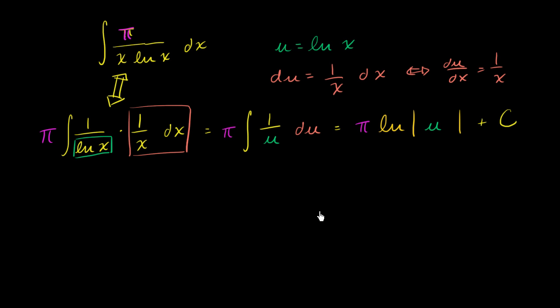And we're almost done. We just have to unsubstitute for the u. u is equal to natural log of x. So we end up with this kind of neat looking expression. This entire indefinite integral we have simplified and evaluated. It is now equal to pi times the natural log of the absolute value of u, but u is just the natural log of x, and then we have this plus c right over here.